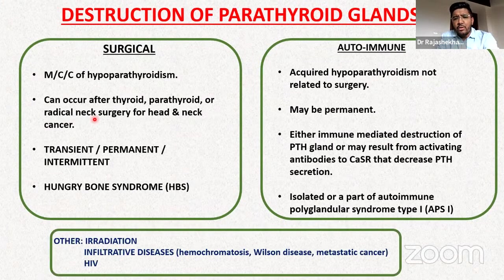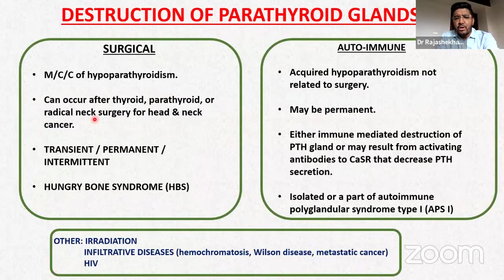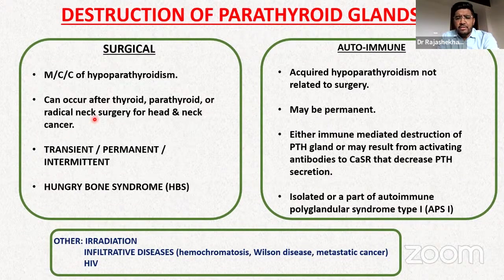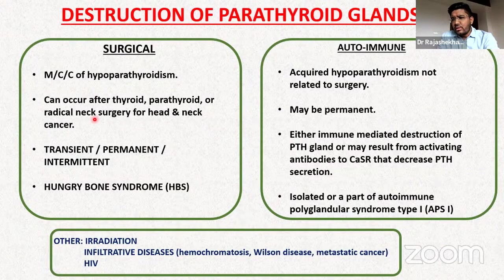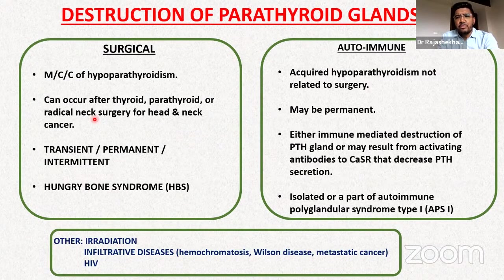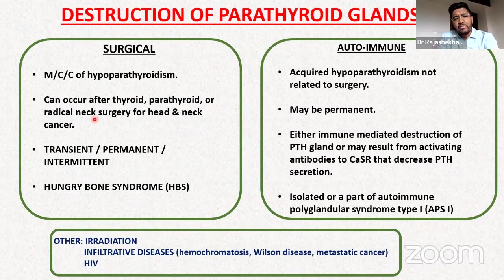Other rare causes of hypoparathyroidism include radiation injury to the neck, or infiltrating diseases such as hemochromatosis, lymphomas, tuberculosis, granulomatous diseases, storage disorders, or end-stage HIV disease where direct infiltration of HIV into the parathyroid glands can cause hypoparathyroidism. Hypocalcemia is very common in HIV, especially with very low CD4 count and high viral RNA load.